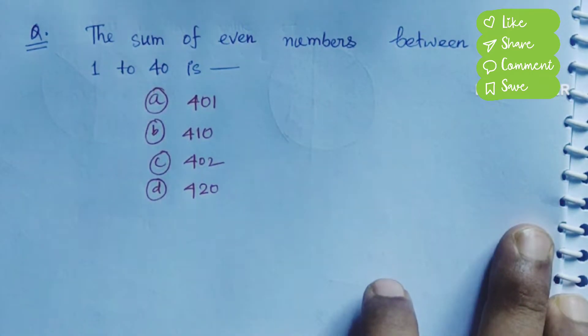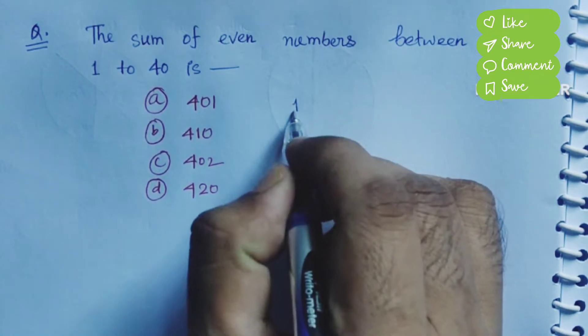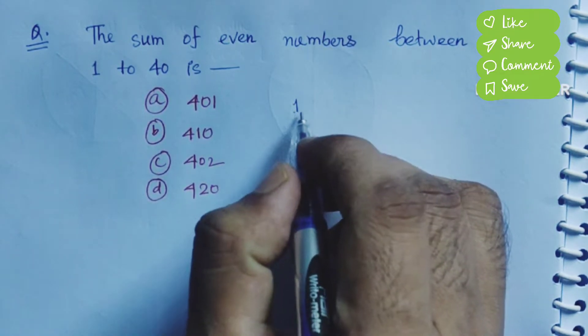Next, I'm going to assume the sum of even numbers between 1 to 40 is equal to what? So sum of even numbers, I'm going to say 1 to 40.